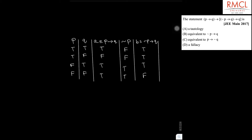Now we have statement C which is equivalent to B implies Q, and the truth table for C gives: true, false, true, true.